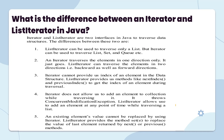Iterator cannot provide the index of an element in the dataset. ListIterator provides methods like nextIndex() and previousIndex() to get the index of an element during traversal. Iterator does not allow us to add an element to a collection while traversing — it throws ConcurrentModificationException. ListIterator allows us to add an element at any point while traversing. Also, an element's value cannot be replaced using Iterator, but ListIterator provides the set(E) method to replace the value of the last element returned by next() or previous().